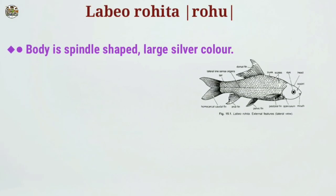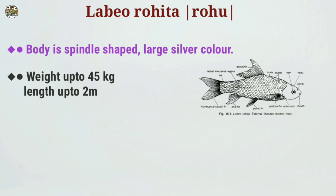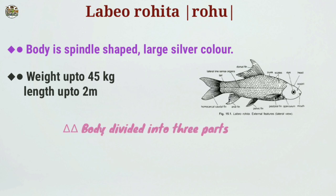The body is spindle-shaped, large, and silver-colored. Adults can reach a maximum weight of 45 kg and a maximum length of up to 2 meters. The body is divided into three parts: head, trunk, and tail.